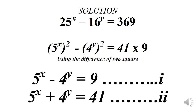So we have 25 raised to power x minus 16 raised to power y equals 369. If we break down 25, we have 5 squared, and 16 we have 4 squared. So we rewrite as 5 squared raised to power x minus 4 squared raised to power y, giving us 5 raised to power 2x minus 4 raised to power 2y equals 41 times 9. Those two factors help us work with base 5 and base 4 to solve further.